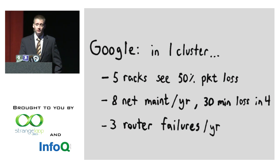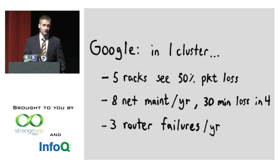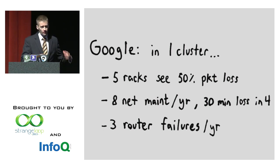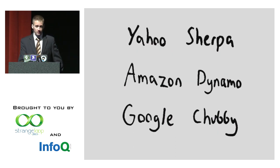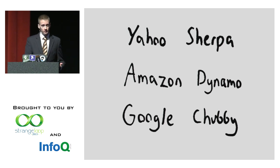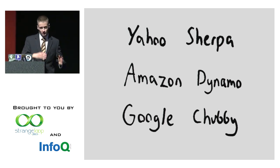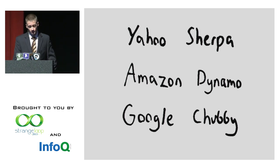Google says that in a cluster's typical first year, five racks will go wonky and see 50% packet loss. They'll see eight network maintenance events per year, which might result in 30 minutes of packet loss in half of those, and three router failures where they have to redirect traffic away from the data center entirely. Sherpa, Dynamo, and Chubby all cite network partitions as a driving factor in their initial design or evolution. Chubby, for example, is a strong consistent system, but they still say network outages are a source of major downtime.